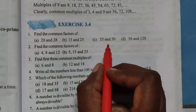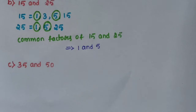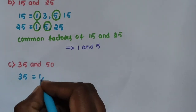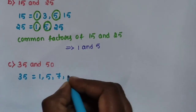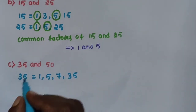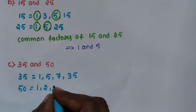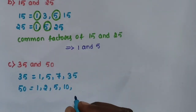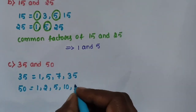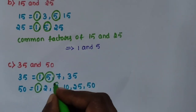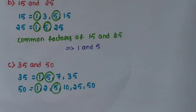Sub-question C: 35 and 50. Factors of 35 are 1, 5, 7, 35. Factors of 50 are 1, 2, 5, 10, 25, 50. The common factors of 35 and 50 are 1 and 5.